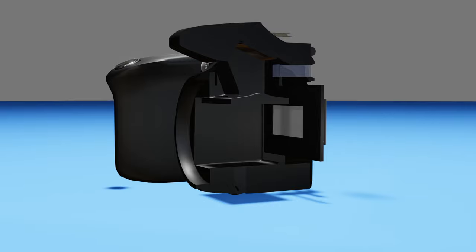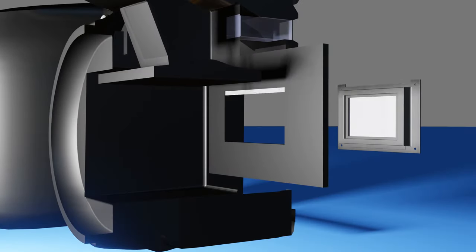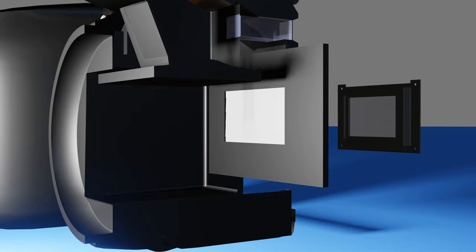The shutter speed can range from multiple seconds by just staying open like this, to a thousandth of a second by working together like this. Notice the use of two curtains allows every part of the sensor to be exposed to light for the same amount of time.